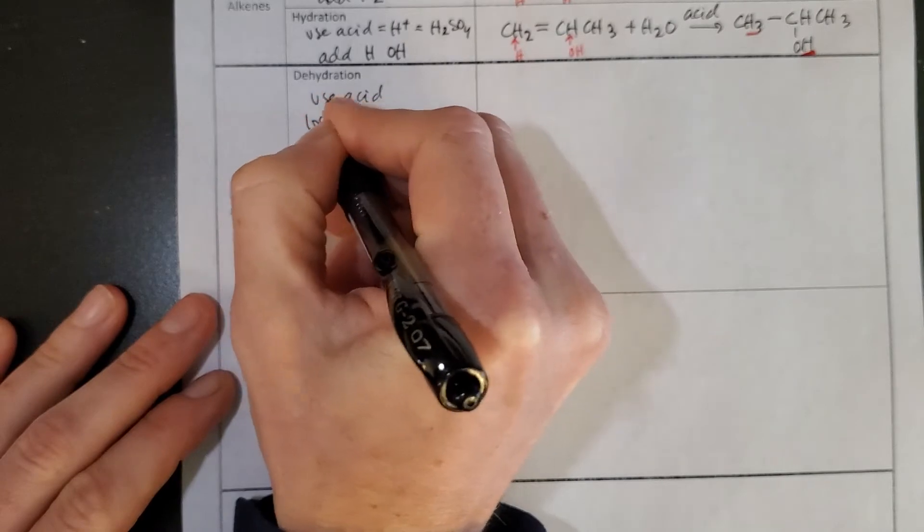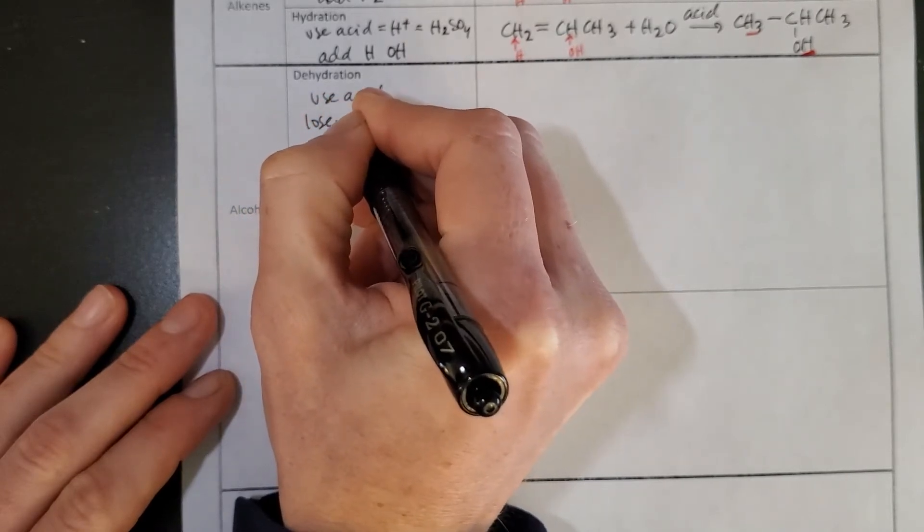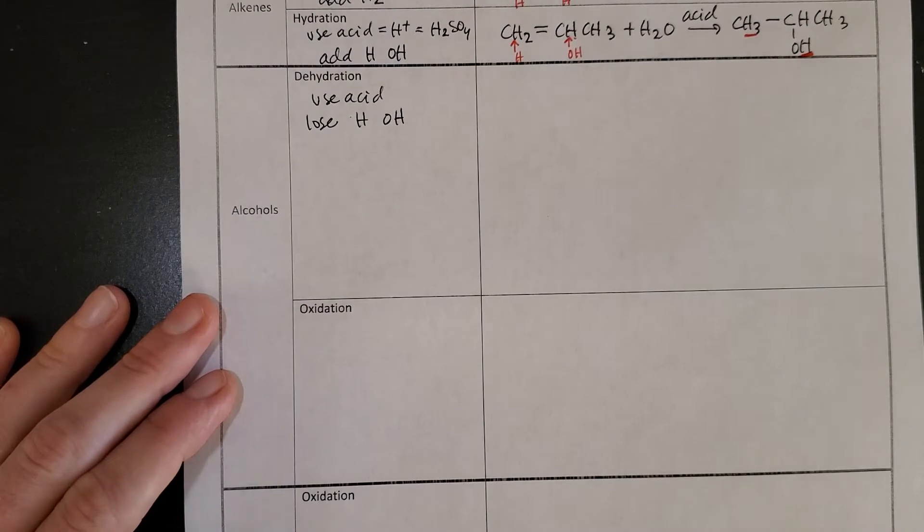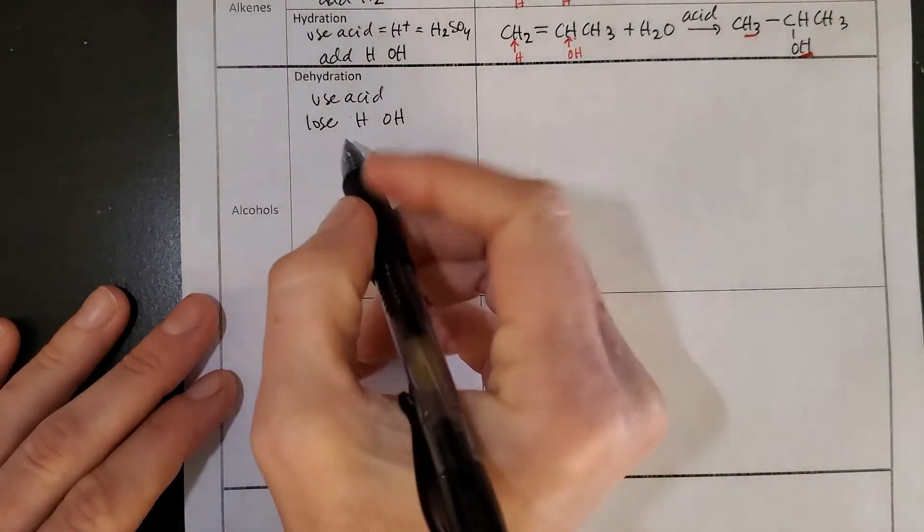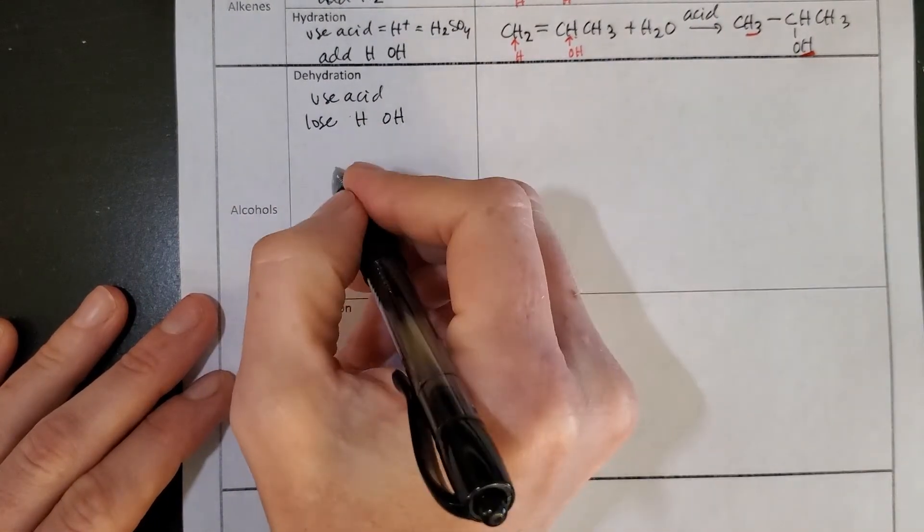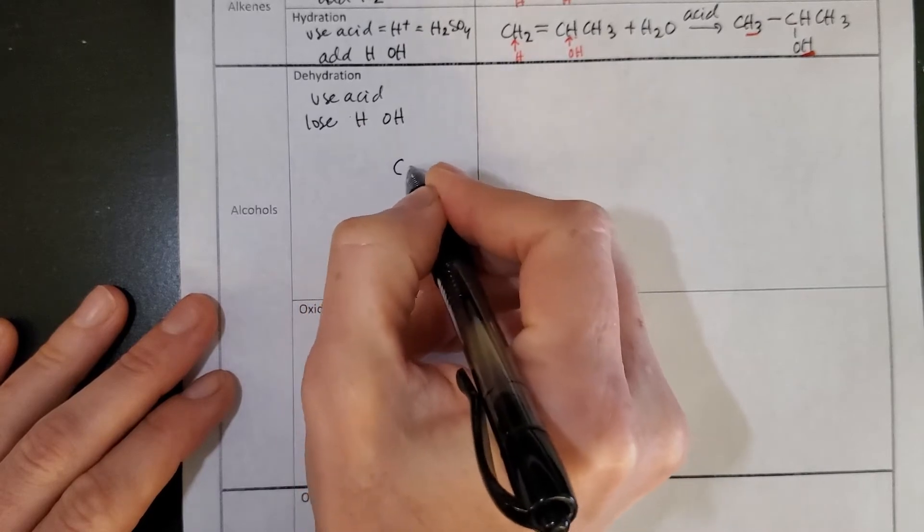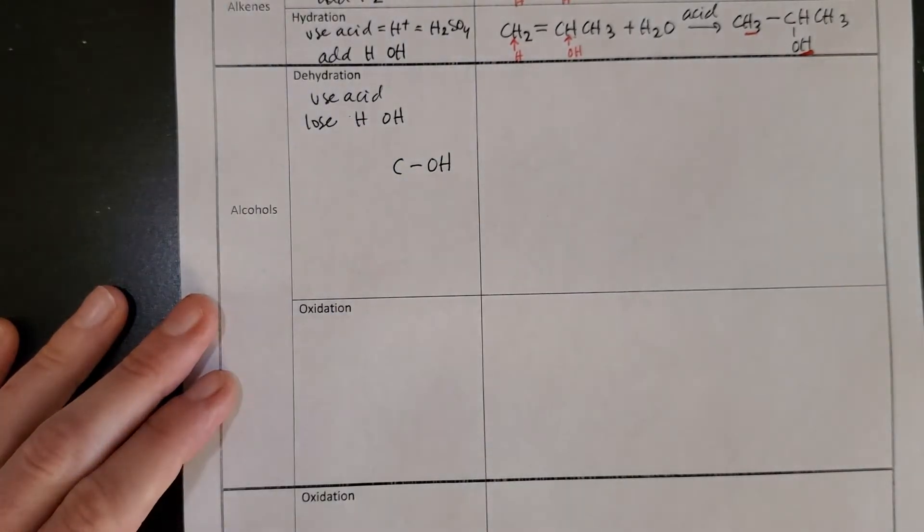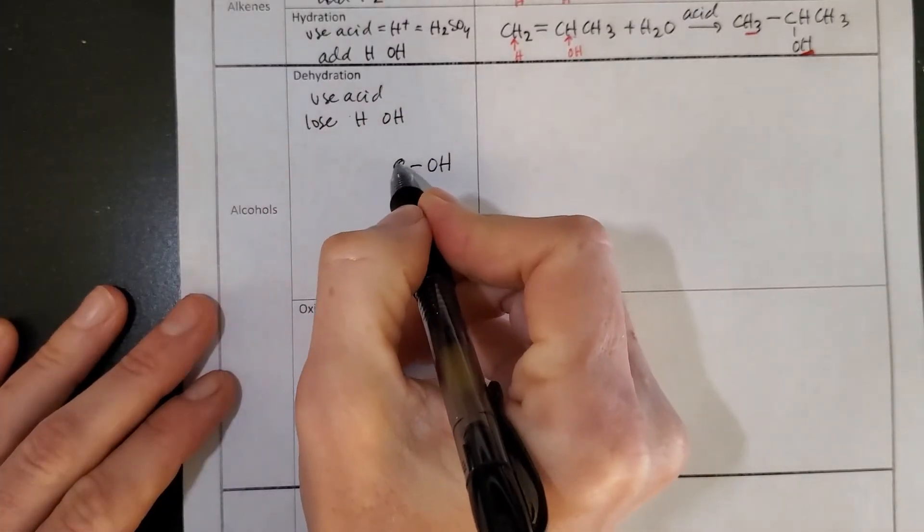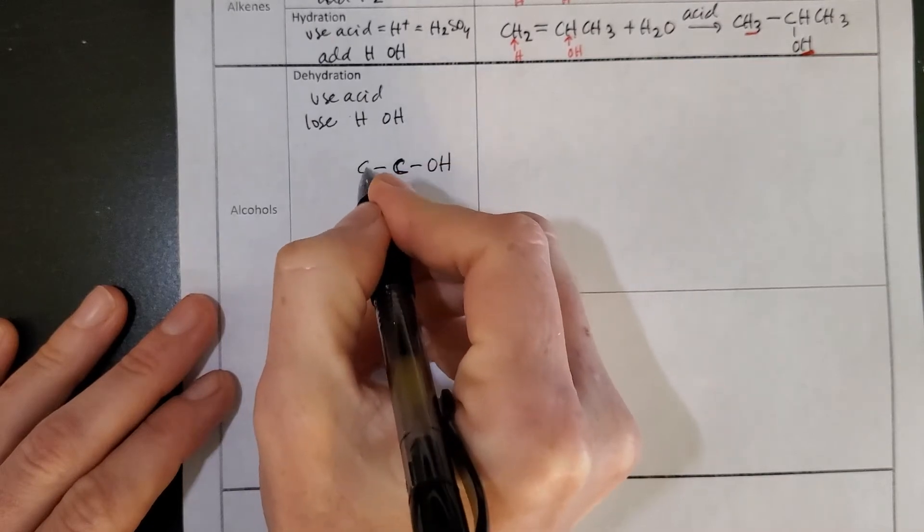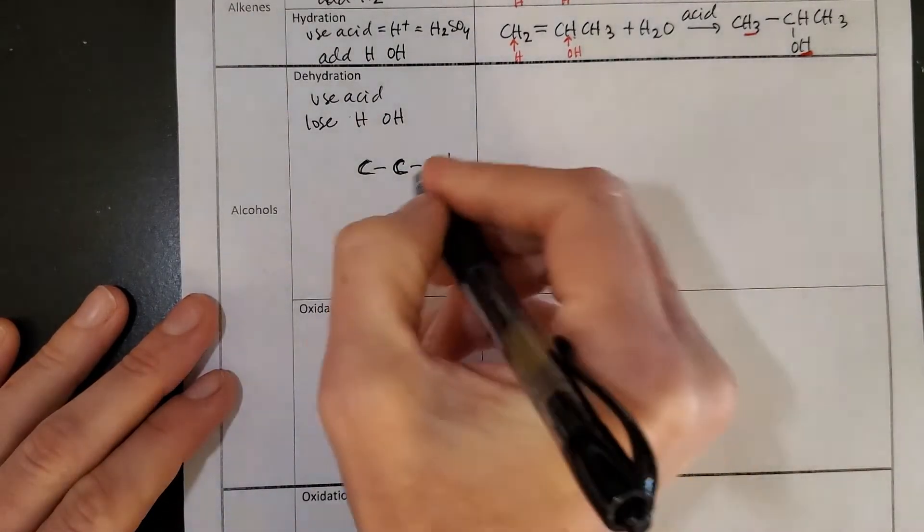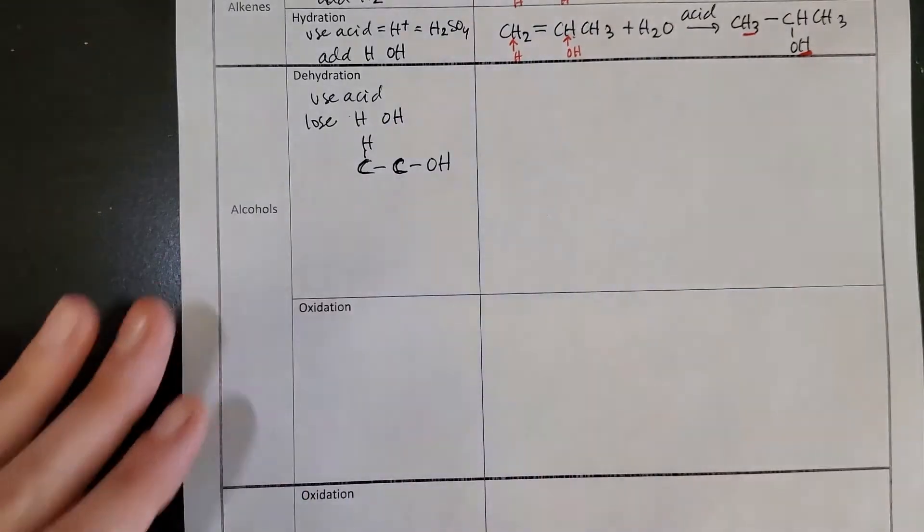You will see a pattern in these dehydration reactions. You're going to see that you have an alcohol and that alcohol has a carbon that it's connected to, and then you'll always follow over to one more carbon and a hydrogen that's connected to that carbon.